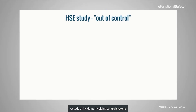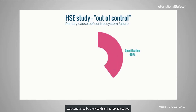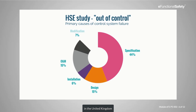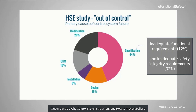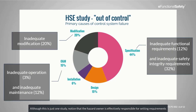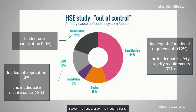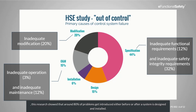A study of incidents involving control systems was conducted by the Health and Safety Executive in the United Kingdom, with the first results published in the book Out of Control: Why Control Systems Go Wrong and How to Prevent Failure. Although this is just one study, notice that the hazard owner is effectively responsible for setting requirements, as well as operating, maintaining and modifying an SIS after it has been placed into service. So even if an end user contracts out the design, this research shows that over 80% of problems get introduced either before or after a system is designed and installed.